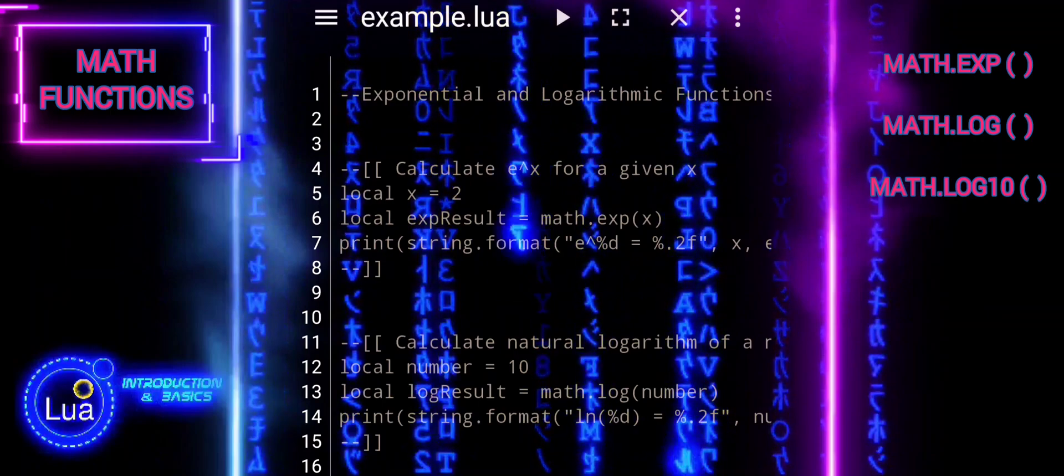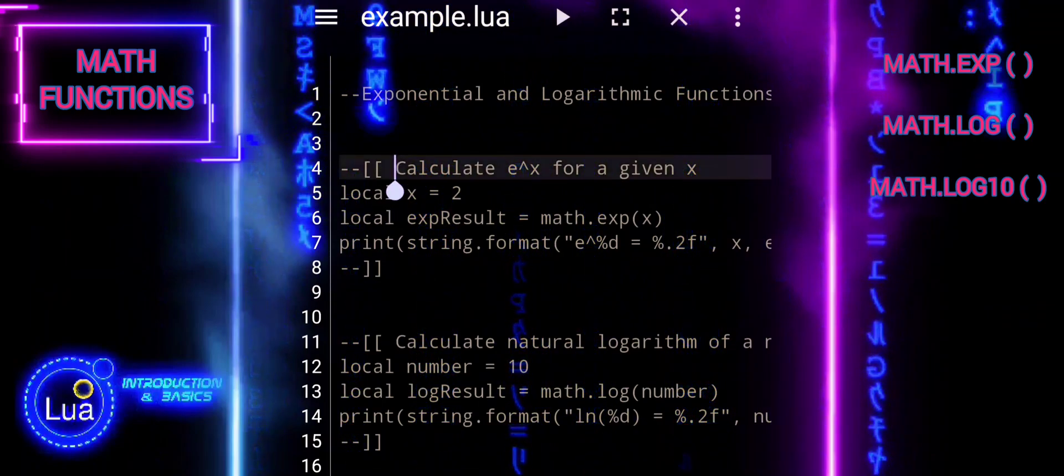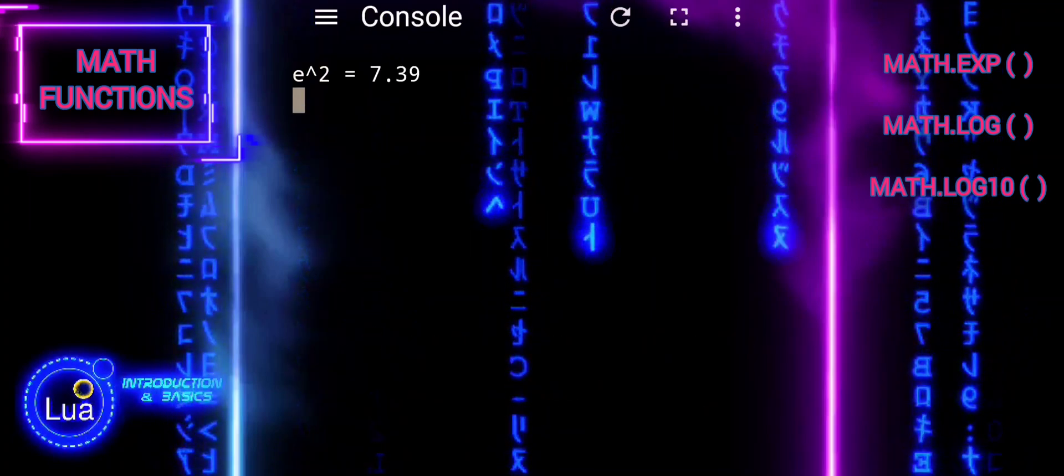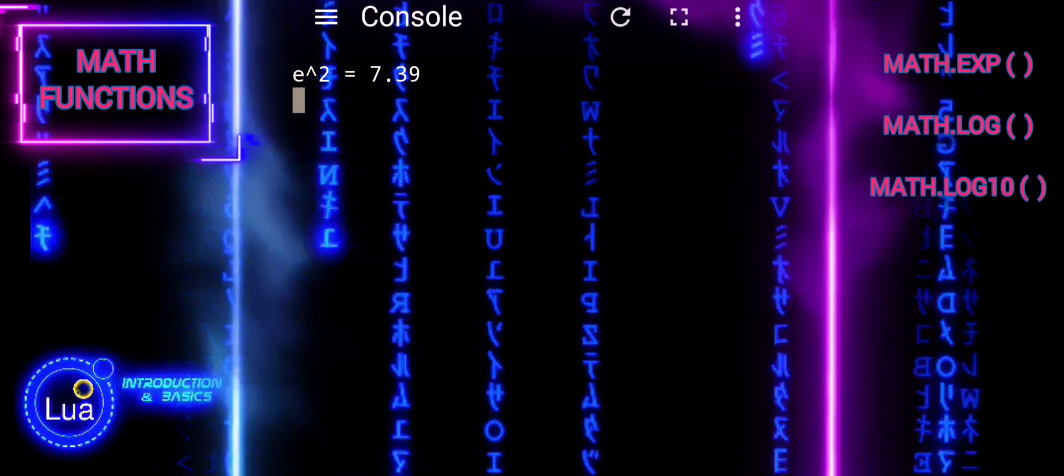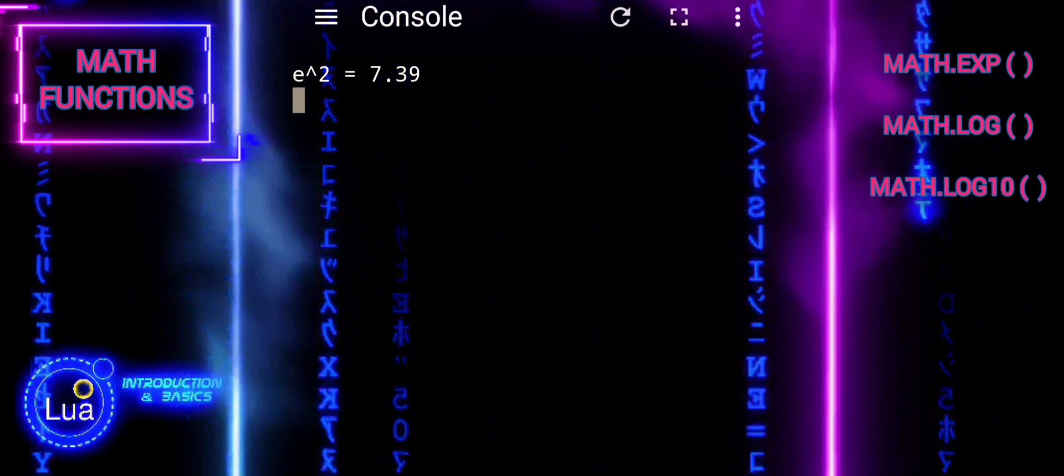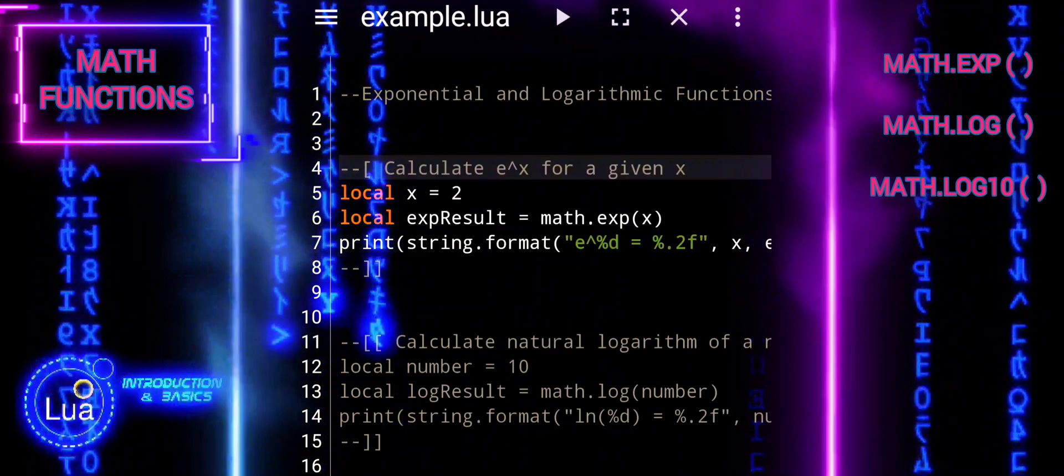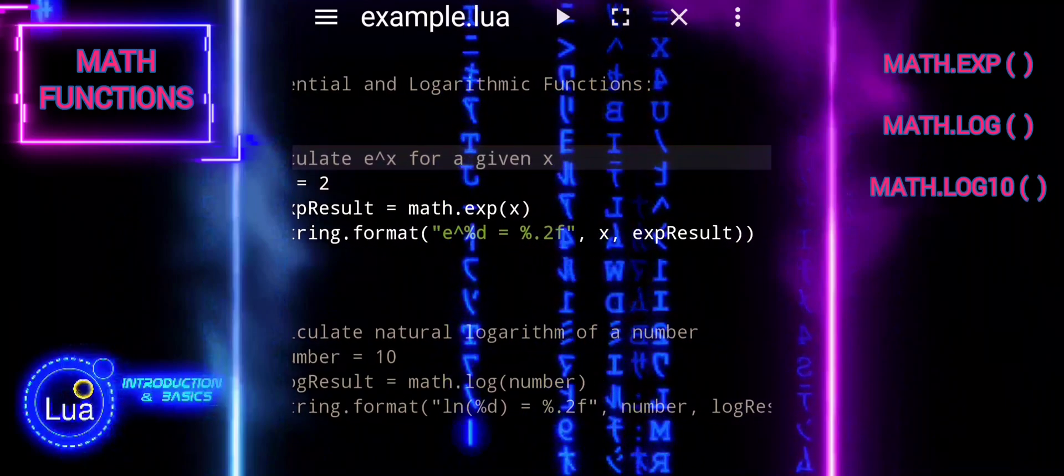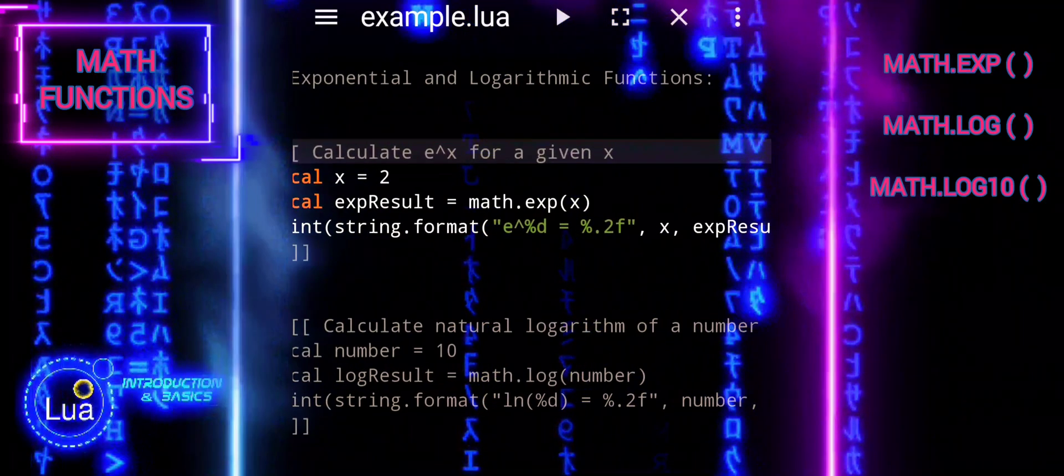Local variable x is assigned to the value 2. Here, x represents the exponent in the exponential function. The second line calculates the value of e raised to the power of x using the math.exp function. The function returns the exponential value of its argument, x in this case.